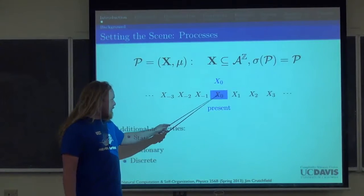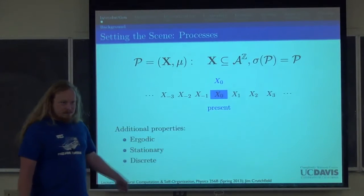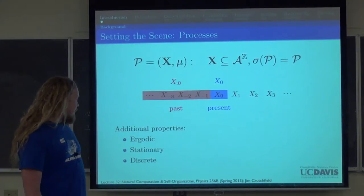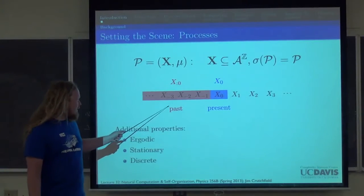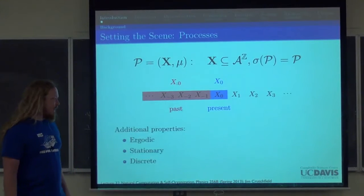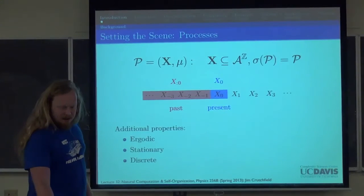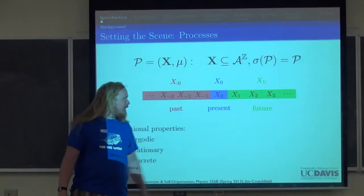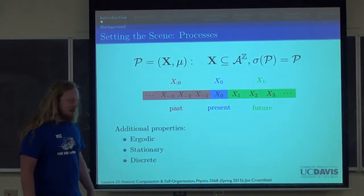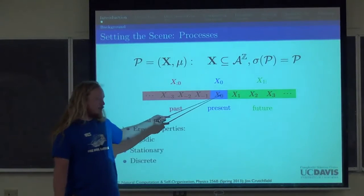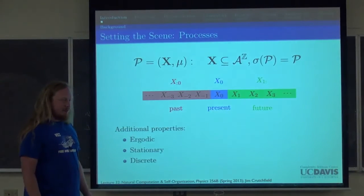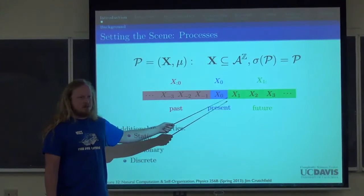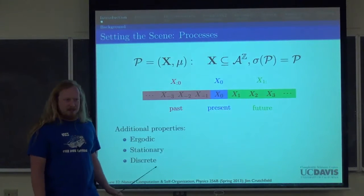We're going to single out x₀ and call it the present — the observable we are seeing right now. Everything before that is the past, and everything after is the future. We'll keep this color scheme: red is past, blue is present, green is future, and mixtures for combinations.